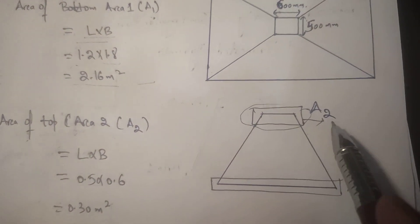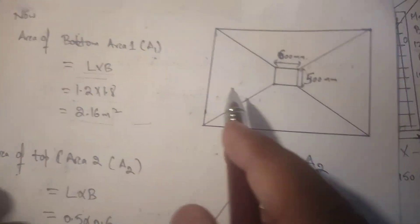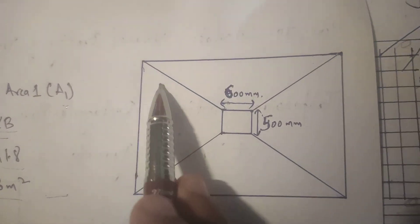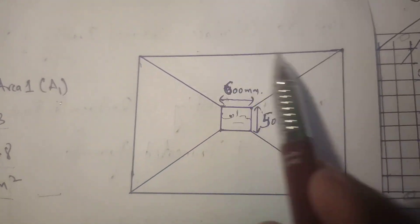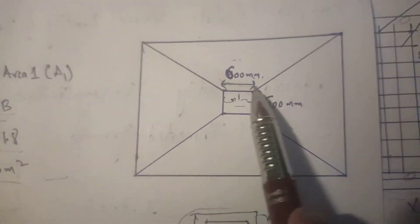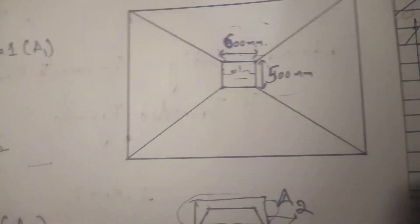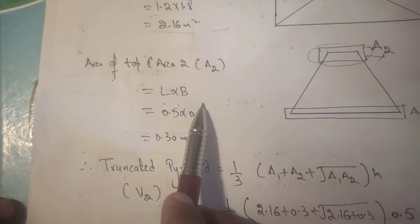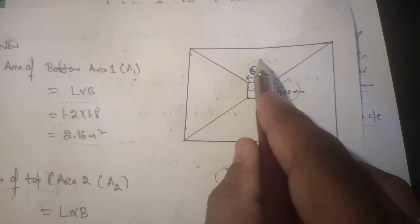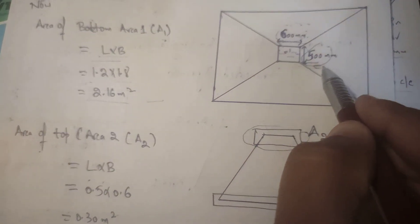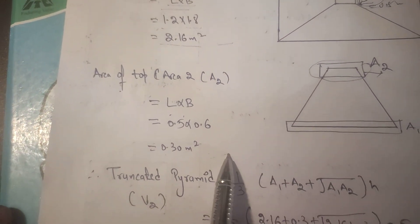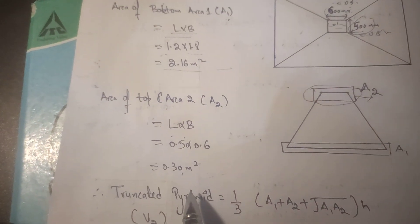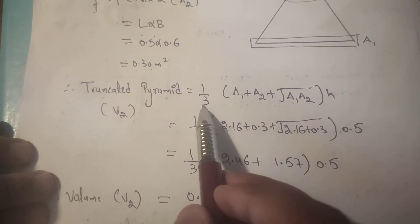You can see here — this is the column inside the trapezoidal footing. The top area A2 is calculated as length × width = 0.5m × 0.6m (i.e., 500mm × 600mm) = 0.30 square meters. So the areas of the top and bottom are now calculated.